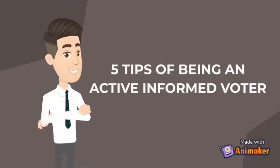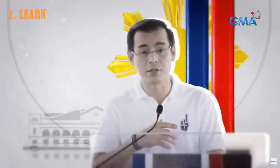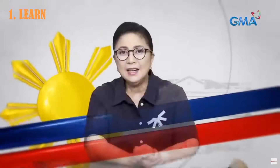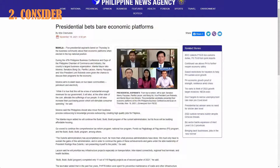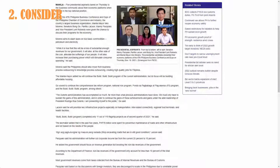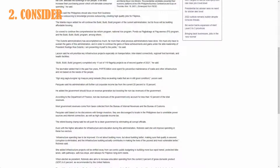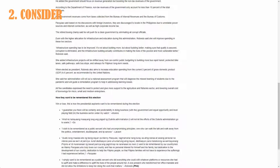5 Tips of Being an Active Informed Voter. Number 1 is Learn. Learn well about politicians, the offices where they are running, and any other important matters in the race. Consider and evaluate the information. Do you have enough data to make an informed decision? If you don't, look up more information.